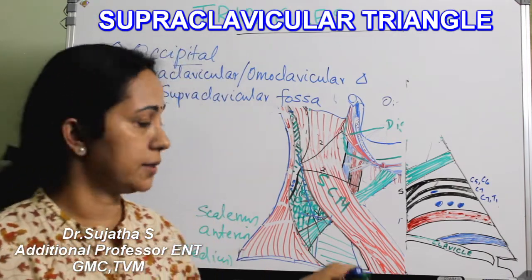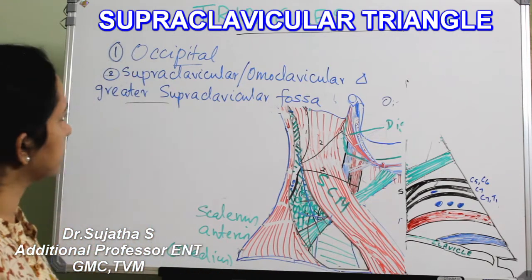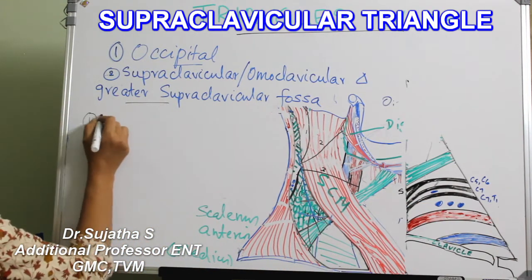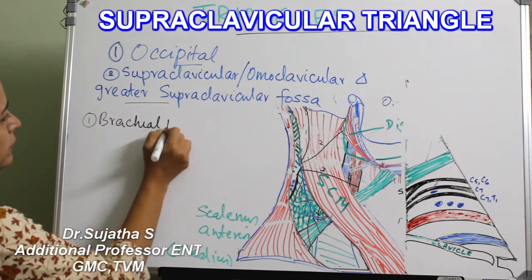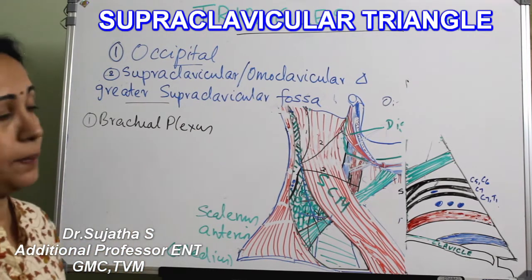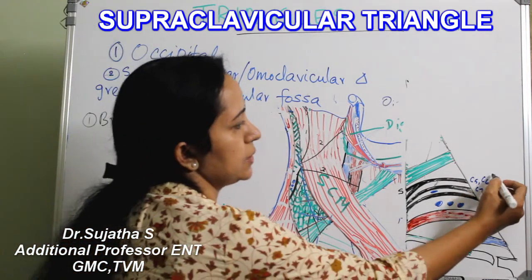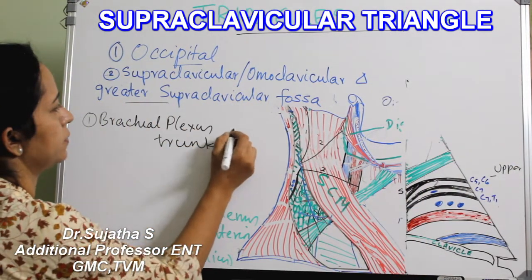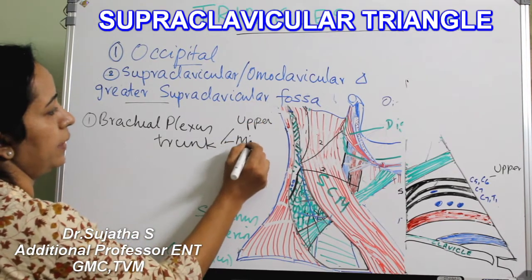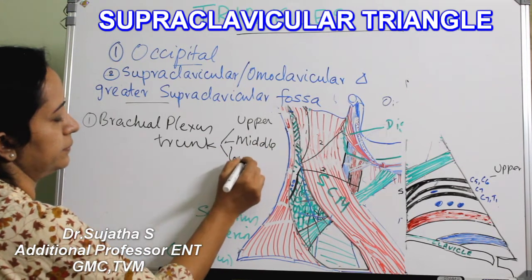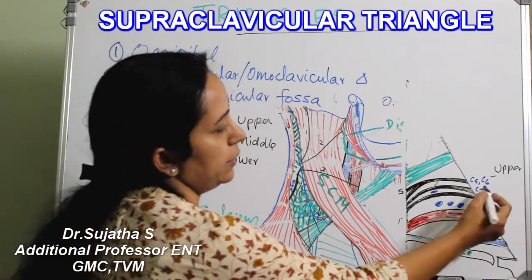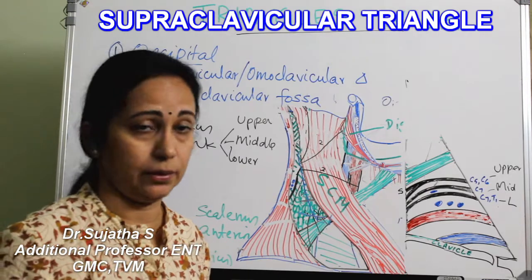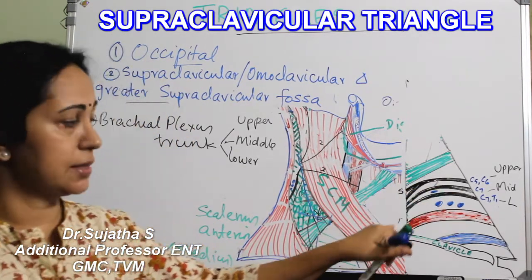The main contents of the posterior triangle are situated in the supraclavicular triangle. The first content is the brachial plexus — specifically the upper, middle, and lower trunks. The upper trunk is formed by C5 and C6, the middle trunk by C7, and the lower trunk by C8 and T1. All three trunks of the brachial plexus are situated in the supraclavicular triangle.